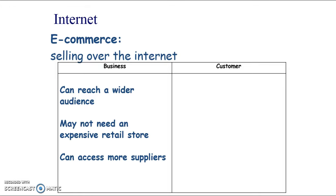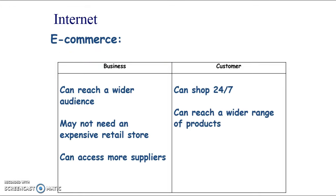Selling online means you may need fewer employees, or different types like web engineers and IT technicians. You can also access more suppliers over the internet — even from foreign countries where prices might be significantly lower. For customers, the benefits include being able to shop at any time, which is very convenient, and accessing a much wider range of products. The disadvantages of e-commerce are covered in the operations section, so I won't go into those here.